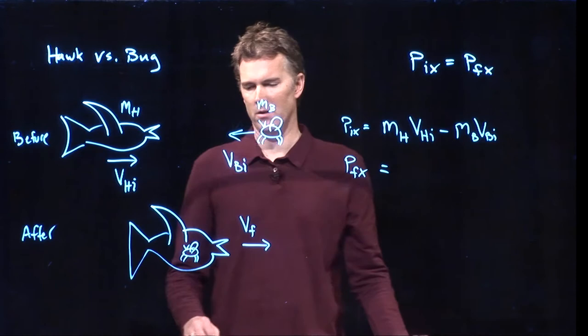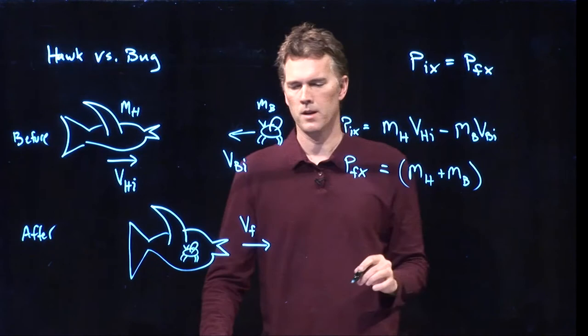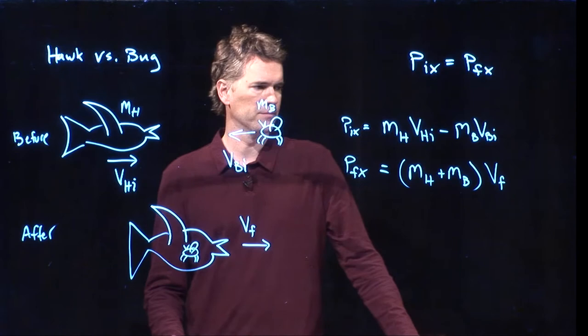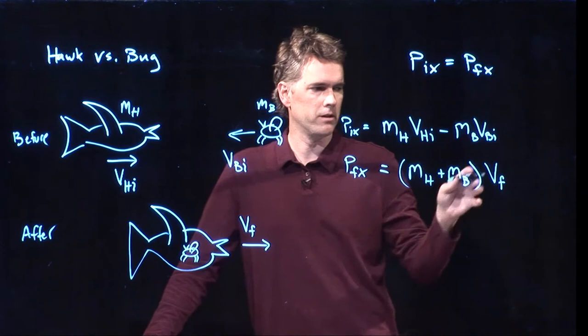P_final in the x direction is the mass of the hawk plus whatever is in its belly, the mass of the bug, times v_final of the whole system. Okay? They're stuck together and so we can combine the two masses because they're both moving at the same speed. And now we can just set them equal to each other and we can solve for v_f. What do we get?